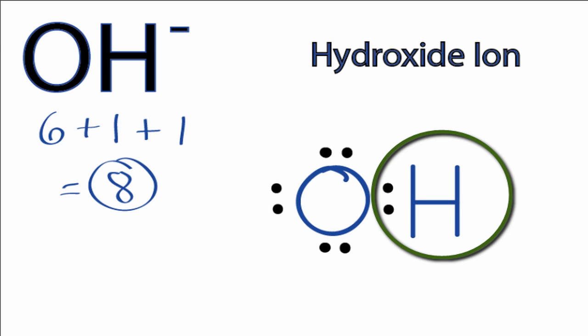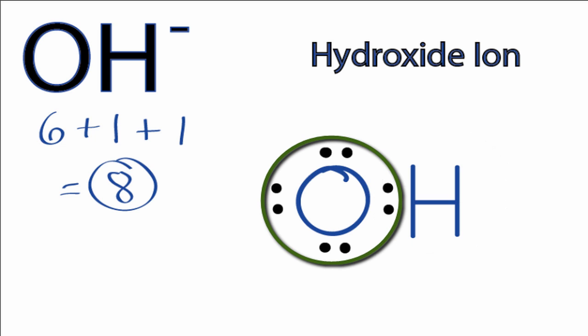So at this point, the hydrogen has two valence electrons, so it has a full outer shell. The oxygen needs eight for an octet and it has eight, and we're still only using the eight valence electrons we have for the OH minus Lewis structure.